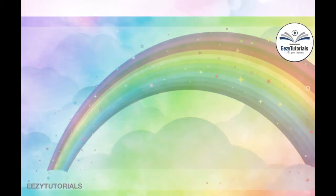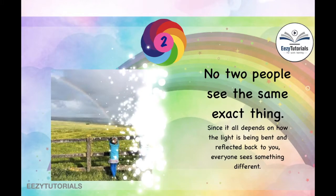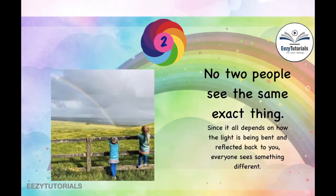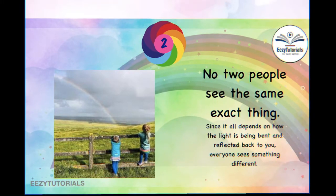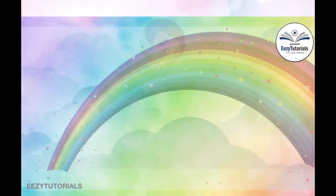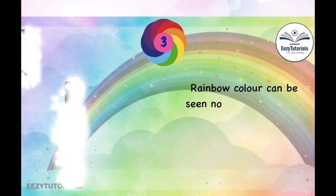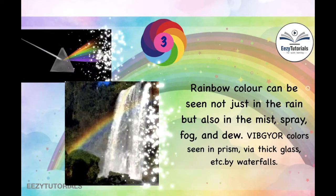No two people see the exact same rainbow, since rainbow visibility depends on the light being bent and reflected back to us — there will be a slight change in the vision of each person. Also, rainbow can be seen not just in rain, but also in mist, spray, fog, dew, and more.